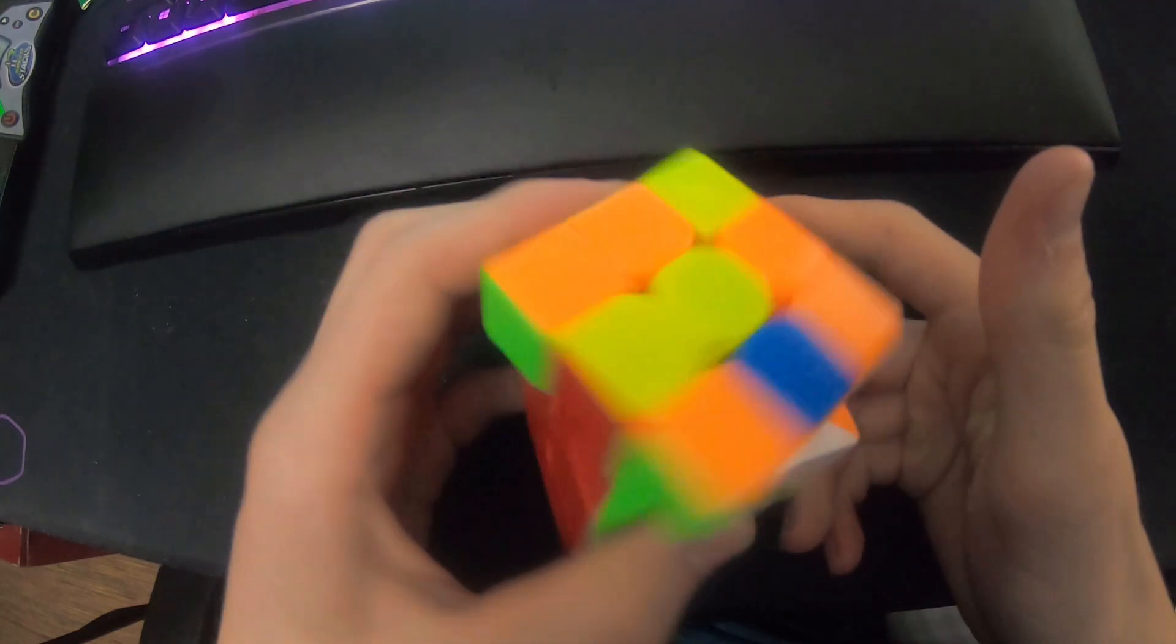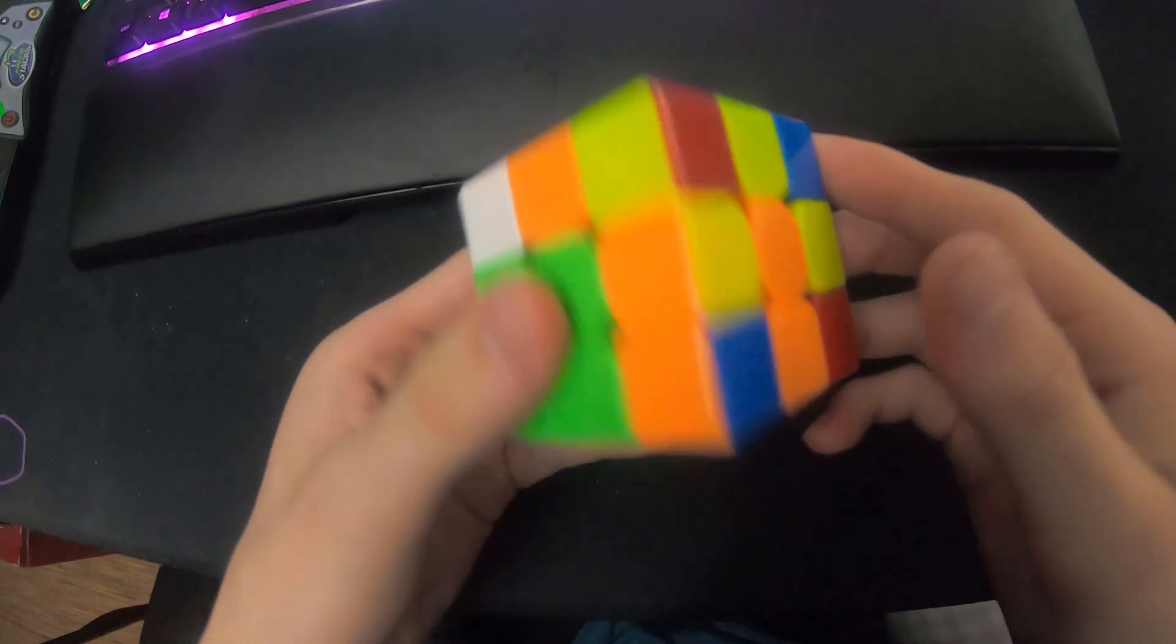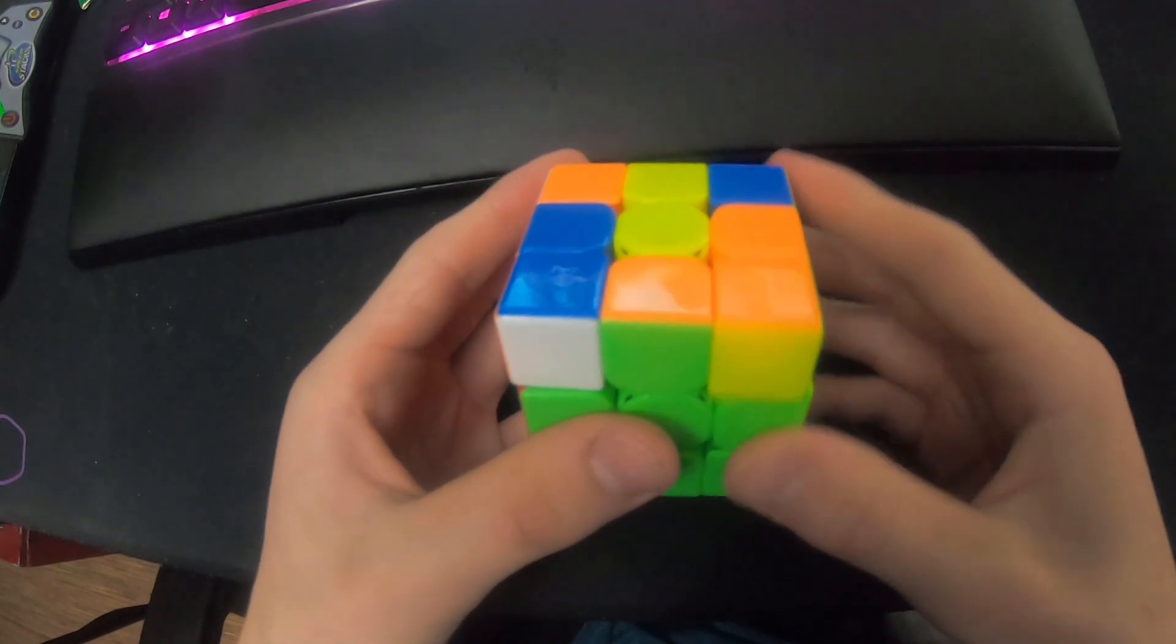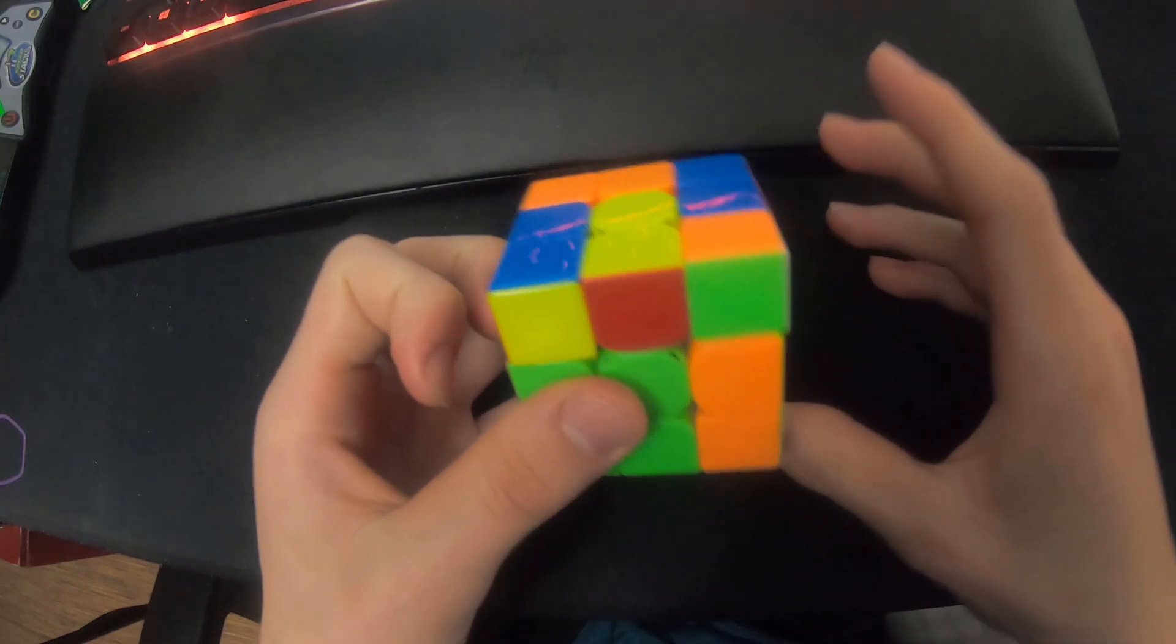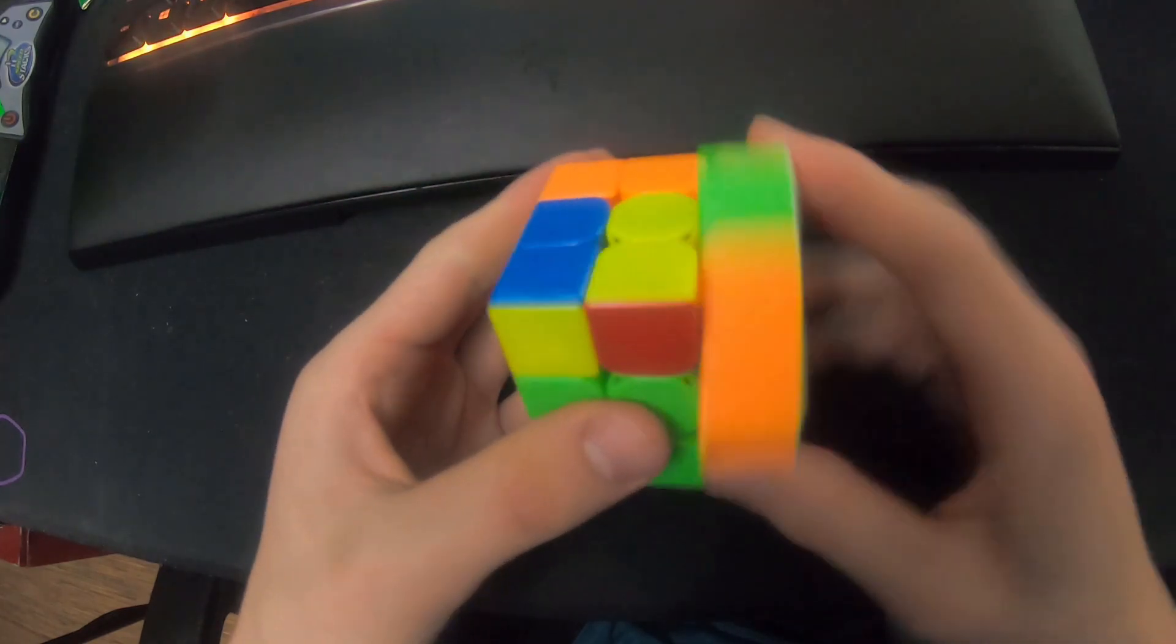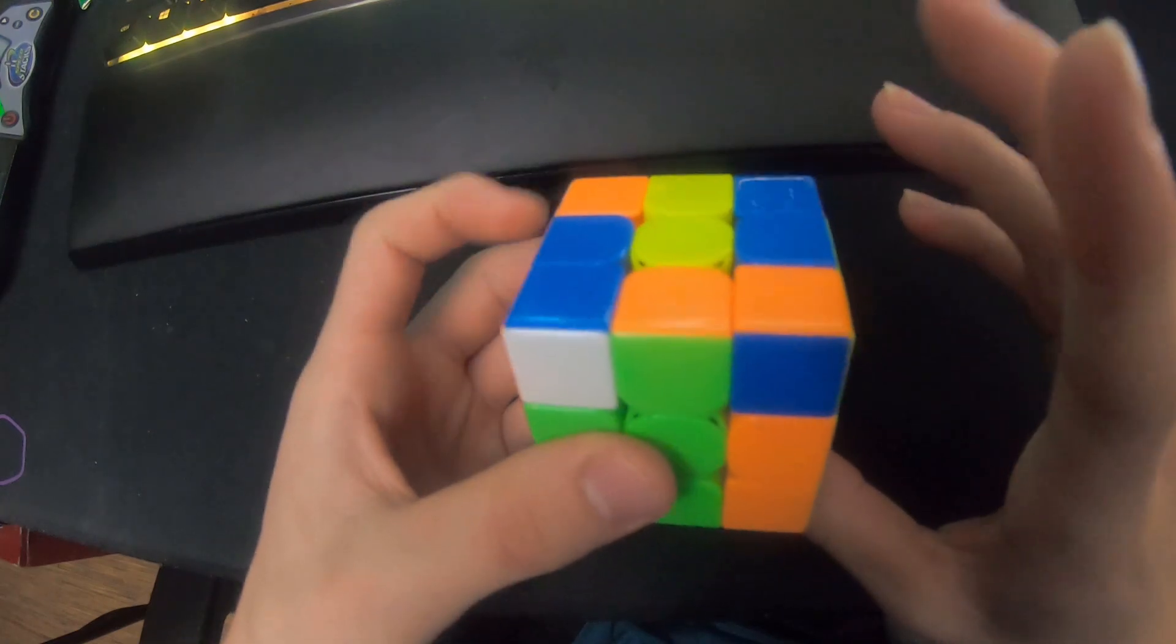Here is the lefty double U2, and this is very important - I use it several times. If I just did like U prime U prime, or regripped weirdly and did normal U2, this solve wouldn't have been as fast.